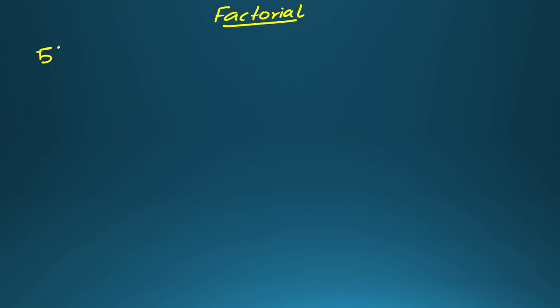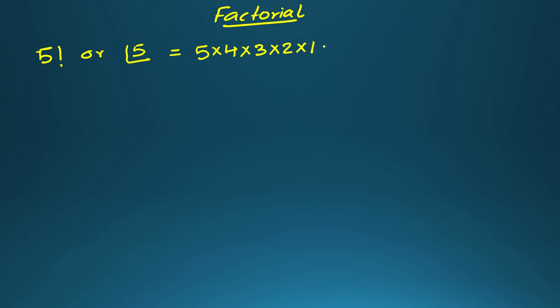What is the meaning of factorial? It is a very easy and very important term in mathematics. Factorial means if you have a number, for example 5, we write it as 5! (factorial 5). It will be the multiplication of all natural numbers from 5 down to 1: 5 × 4 × 3 × 2 × 1, which equals 120.